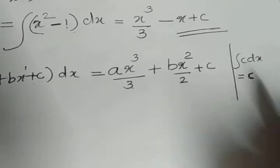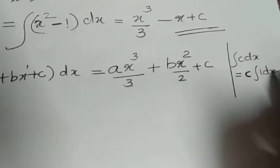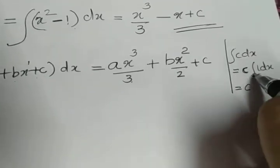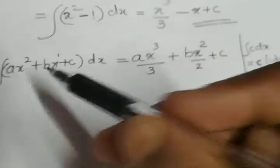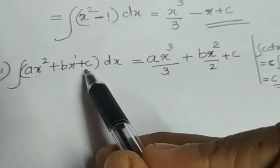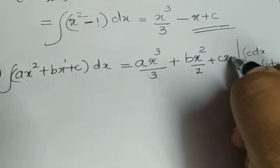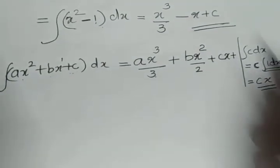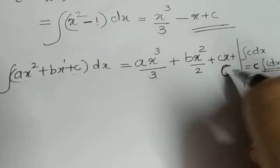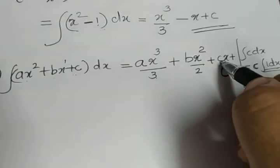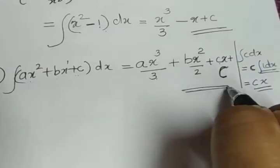For the third term, c is a constant. Taking it outside the integral, we get c into integral of 1 dx, which is c into x. So whenever a constant comes for integration, that constant times x is the integral. The final answer is ax³/3 + bx²/2 + cx, plus a constant of integration written as capital C, since small c is already used in the question.